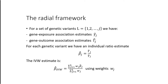Let's start with a set of genetic variants L, for which we have gene-exposure association estimates gamma J and gene-outcome association estimates big gamma J. For each genetic variant, we have an individual ratio estimate beta J, which we can calculate by dividing the gene-outcome association by the gene-exposure association. We can then arrive at our IVW estimate by calculating a weighted average of individual ratio estimates using a given weighting W_J.